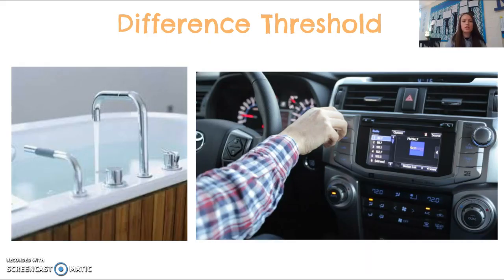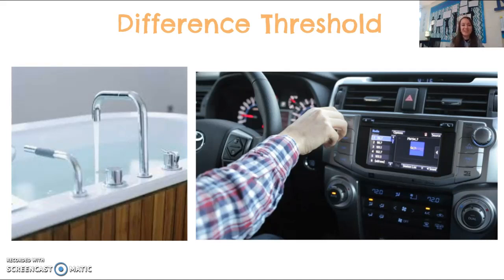The difference threshold is the point at which you notice a stimulus has changed. You're receiving a constant stimulus that is gradually changing, and you may not notice it at first. But there's a point at which you realize it has changed. For example, if you're sitting in warm bath water that is gradually getting colder, you don't notice it at first because it's so gradual — but the point at which you notice it has gotten colder is your difference threshold.